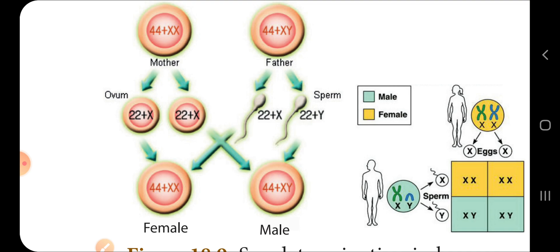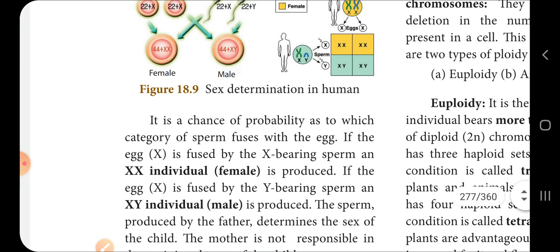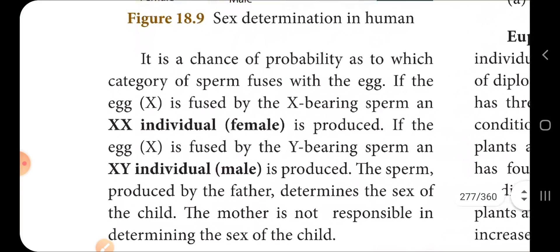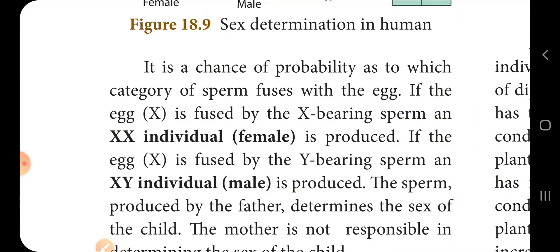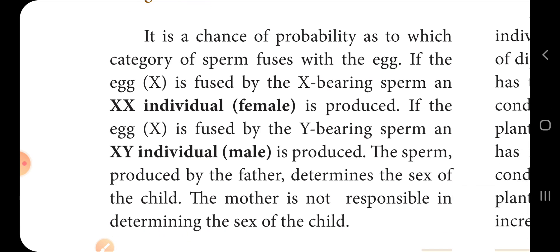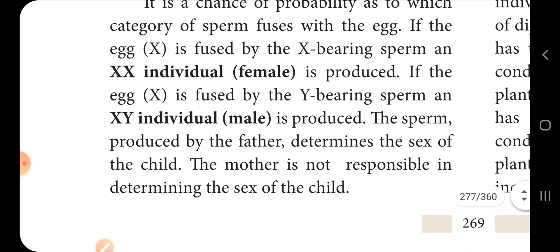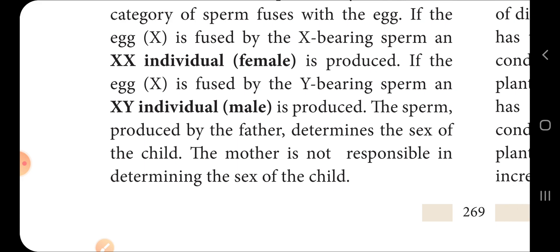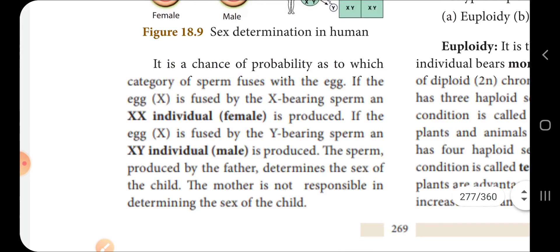Sex is determined as follows: male is heterogametic, female is homo-gametic. Sex determination depends on the probability of which category of sperm fuses with the egg. If the egg fuses with an X-bearing sperm, a female organism will produce a female baby. If the egg fuses with a Y-bearing sperm, it is determined to be a male baby. So the sperm determines the sex of the child, meaning the father determines the sex of the child. This is the textbook question answer.